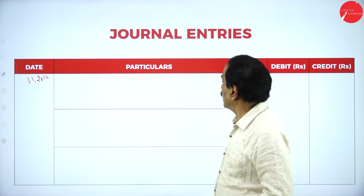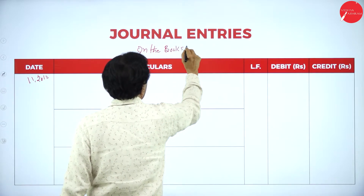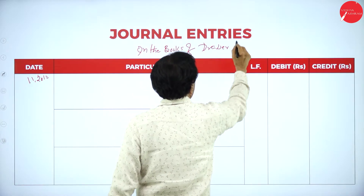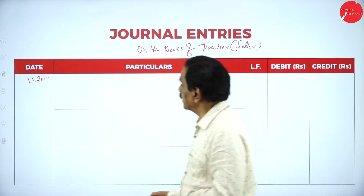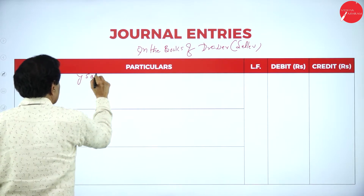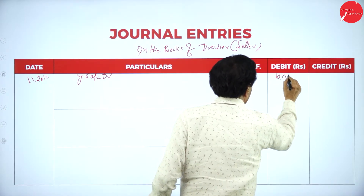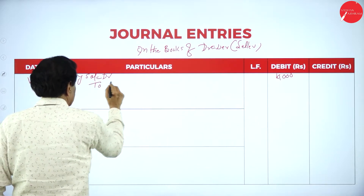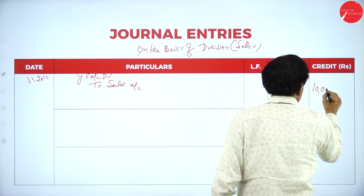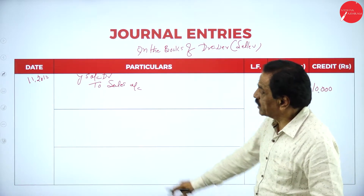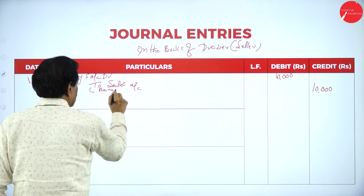General entry in the books of the drawer, that is the seller. On 1-1-2012, X sold goods to Y. Entry: Y's account debit, what is the amount of the bill? 10,000, to sales account 10,000. Being the goods sold on credit. Y's account debit to sales account — being credit sales.